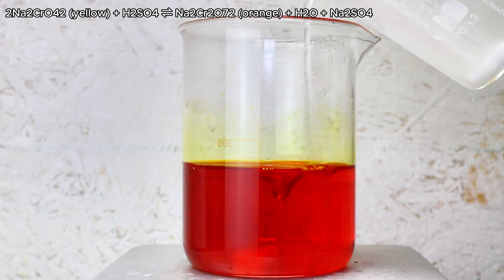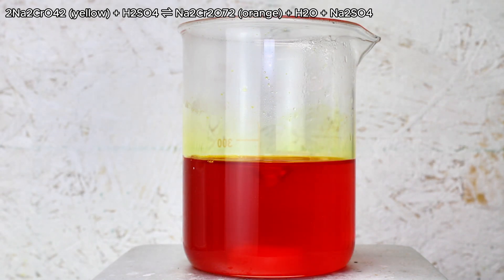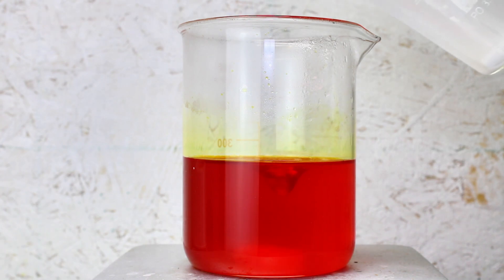I then added some potassium chloride, and once it had thoroughly mixed for a while, I left it overnight to allow the potassium dichromate crystals to form.